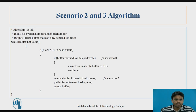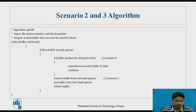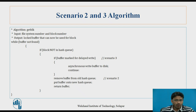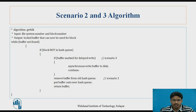Looking at the get block algorithm: we search for the buffer in a loop until it is found. While the buffer is not found, the loop continues. If the block is not in the hash queue, we check whether the buffer is marked for delayed write — that is scenario 3 — in which case we perform an asynchronous write of the buffer to disk and continue, meaning no action is taken on that buffer until it is written back to disk. For scenario 2, if the block is not in the hash queue and is not marked as delayed write, we remove the buffer from the old hash queue, place it onto the new hash queue, and return the buffer.